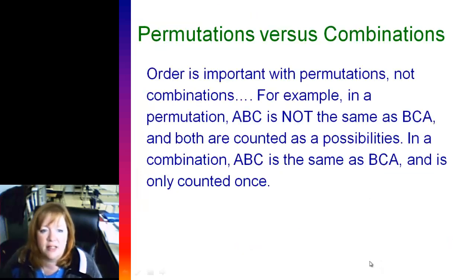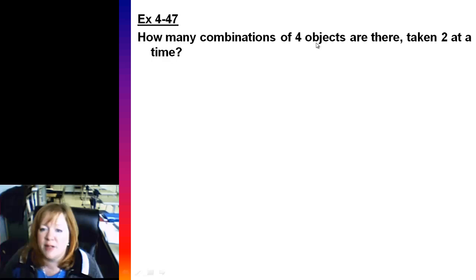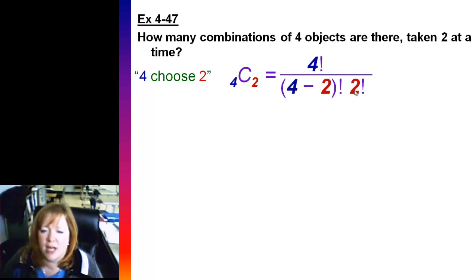n choose r, like I said, and let's talk about the difference between permutation and combination, when to use one and not the other. Order is important with permutations. You're ranking something. For combinations, order is not important. So things like ABC and BCA are only counted once. How many combinations of four objects are there taken two at a time? And you plug it in, four choose two, there's your formula. Just to familiarize yourself, you'd have four factorial over (four minus two) factorial times two factorial, which would give us four factorial over two factorial two factorial. These guys cancel out and you would end up with six.